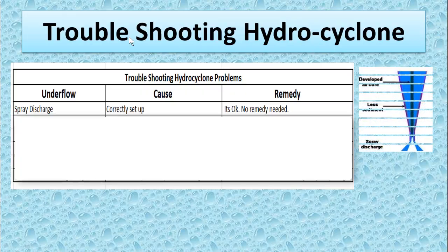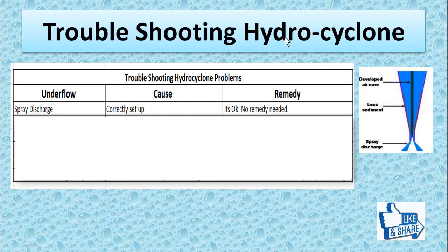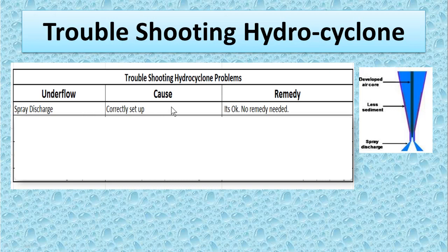Troubleshooting for the hydrocyclone. Underflow: if it is spray discharge, there will be no cause, because spray discharge means the unit is correctly set up. No remedy is needed.